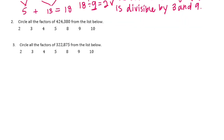Number 2. Circle all the factors of 424,380 from the list below. The divisibility test for 2 is just if it ends in an even number — the unit digit is 0, 2, 4, 6, or 8. It ends in 0, which means that it is divisible by 2.